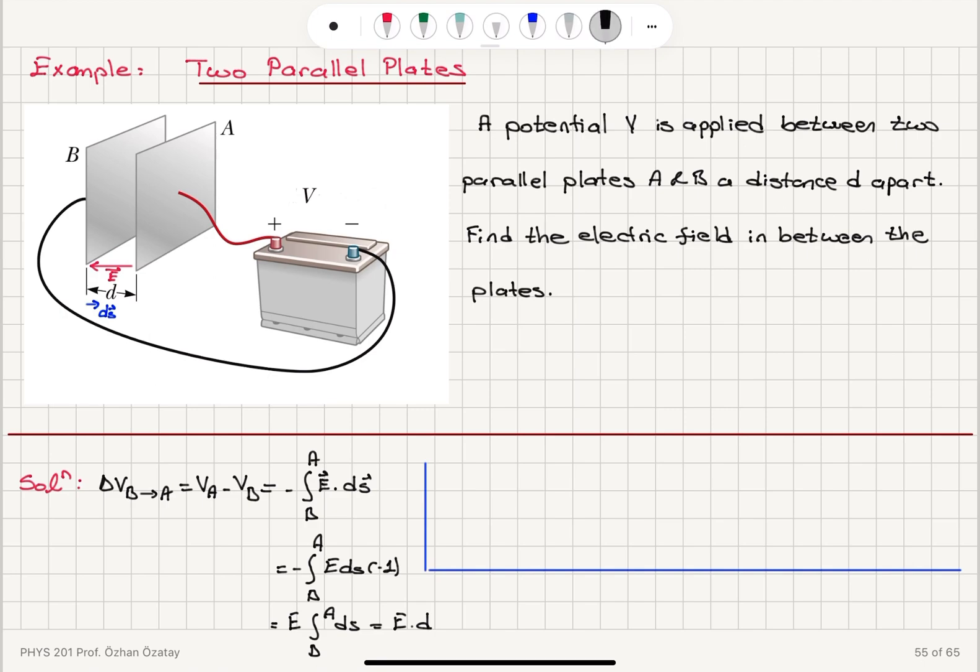E times d is equal to the potential difference that we apply. And therefore, we find that the electric field in between the plates can be given in terms of the potential difference and the distance between the plates as V over d.